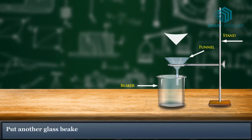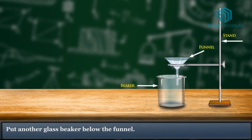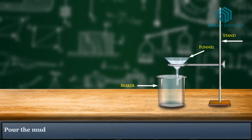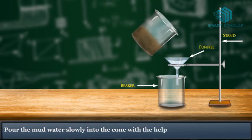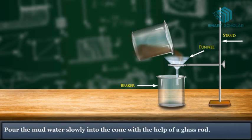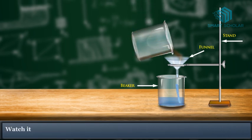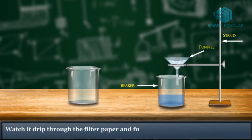Put another glass beaker below the funnel. Pour the mud water slowly into the cone with the help of a glass rod. Watch it drip through the filter paper and funnel.